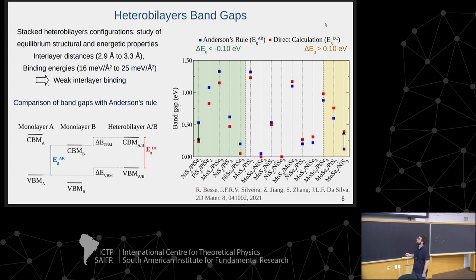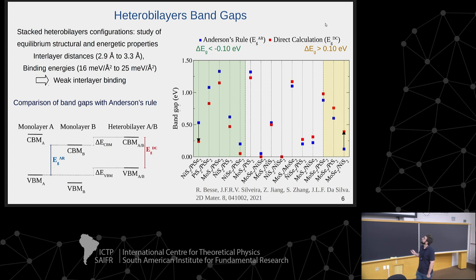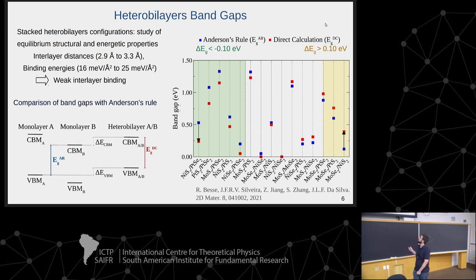We compare Anderson's rule band gap predictions — the difference between the lower conduction band minimum and higher valence band maximum — against direct calculation band gaps for the heterobilayers. The results are ordered by the difference between the two. For cases with the green background, band gaps are decreased by more than 0.1 eV; in other cases the band gap is increased by more than 0.1 eV; some intermediate cases show smaller deviations. We now investigate the physical mechanisms behind these non-negligible deviations from Anderson's rule.